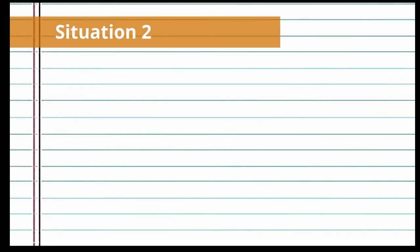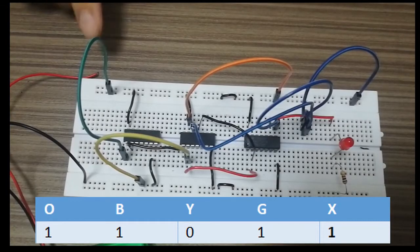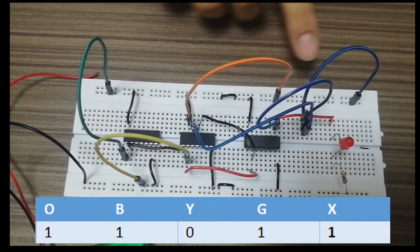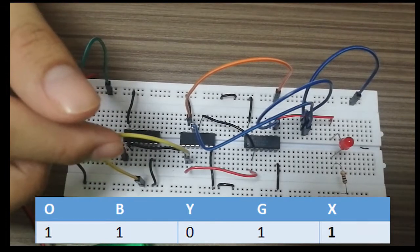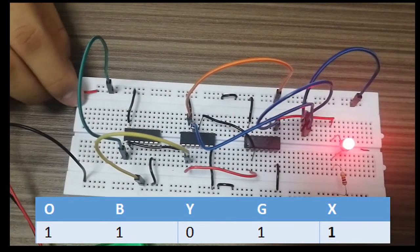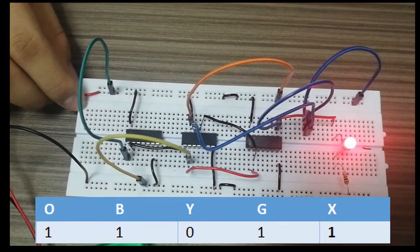For another situation where someone is pressing the doorbell and says hello, but the water in the kettle does not boil for 5 minutes and the button is being pressed — this means inputs G, O, and B are connected to high while Y is connected to low. When we connect our battery into the circuit, the LED will light up.